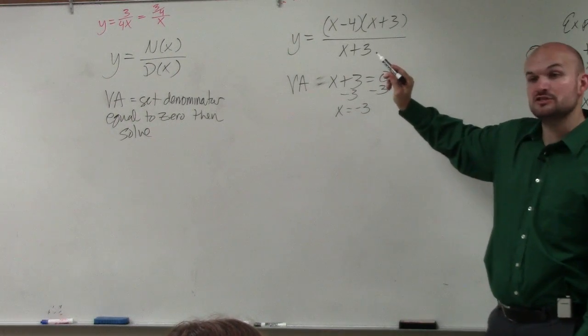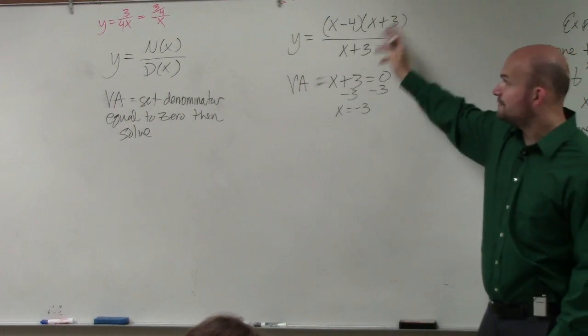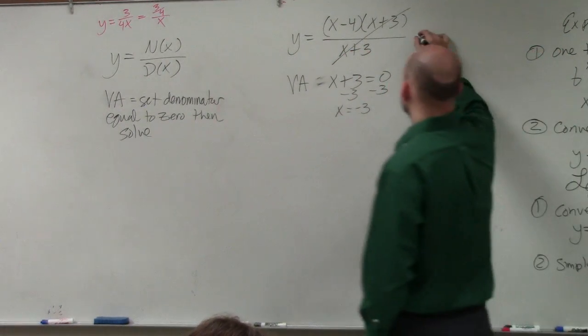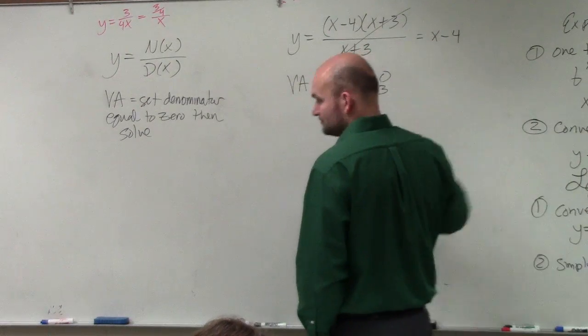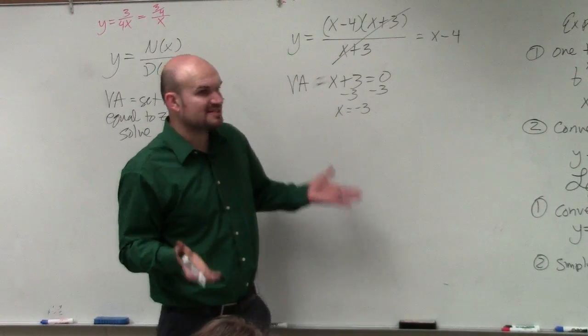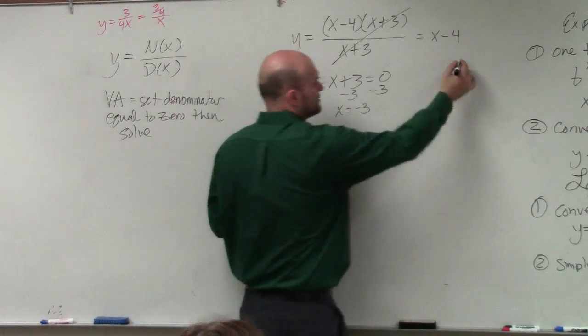is we can apply the division property, right? If you apply the division property, the x plus 3's divide out, leaving us with just x minus 4. Right? Well, but still, and that's a line. So that looks something like this.